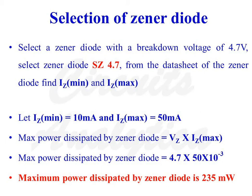The maximum power dissipated by the Zener diode is VZ times IZ maximum, which equals 235mW.